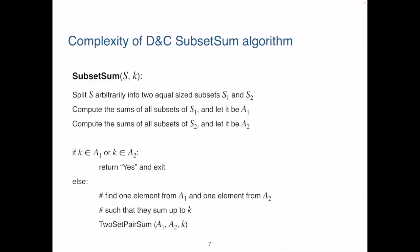Now let's find out the complexity of the divide-and-conquer subset sum algorithm. Let's first denote the cardinality of set S as n. Each of S1 and S2 has half of the numbers in S, so they have n over 2 numbers. Enumerating all the subsets of A1 and computing their sums will take big O of 2 to the power of n over 2 time, and the same for A2. Then we have an if-else statement here.